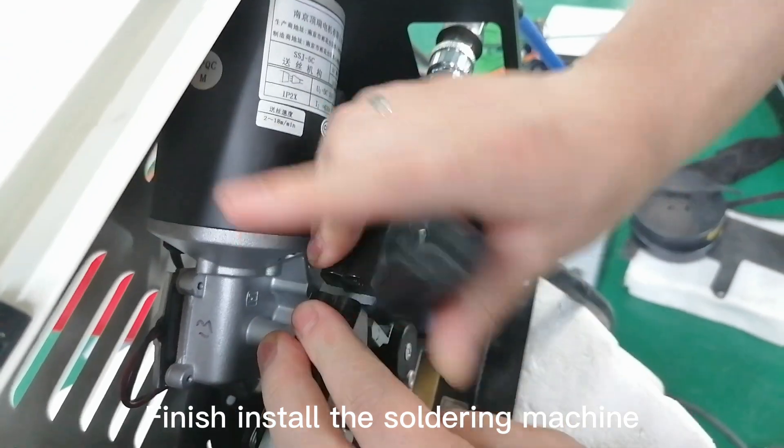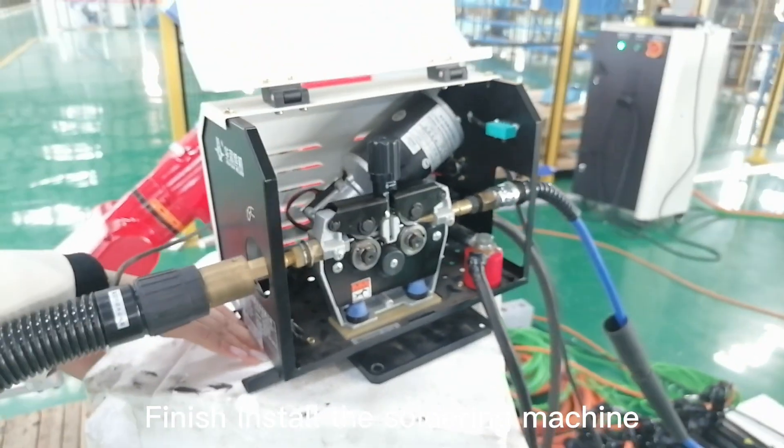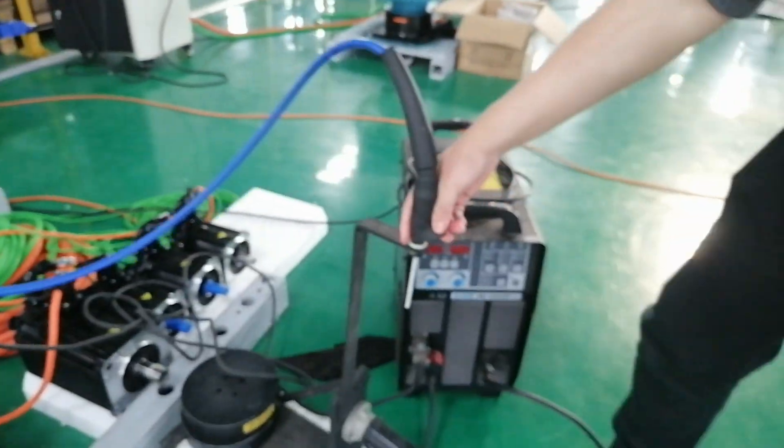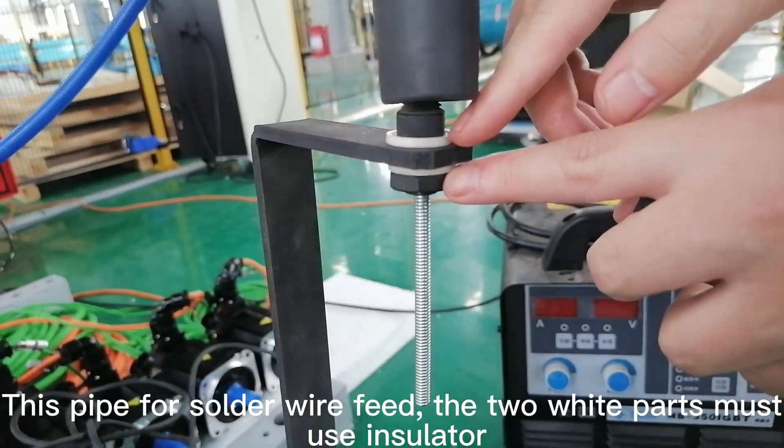Finish install the soldering machine. This pipe for solder wire feed, the two white parts must use insulator.